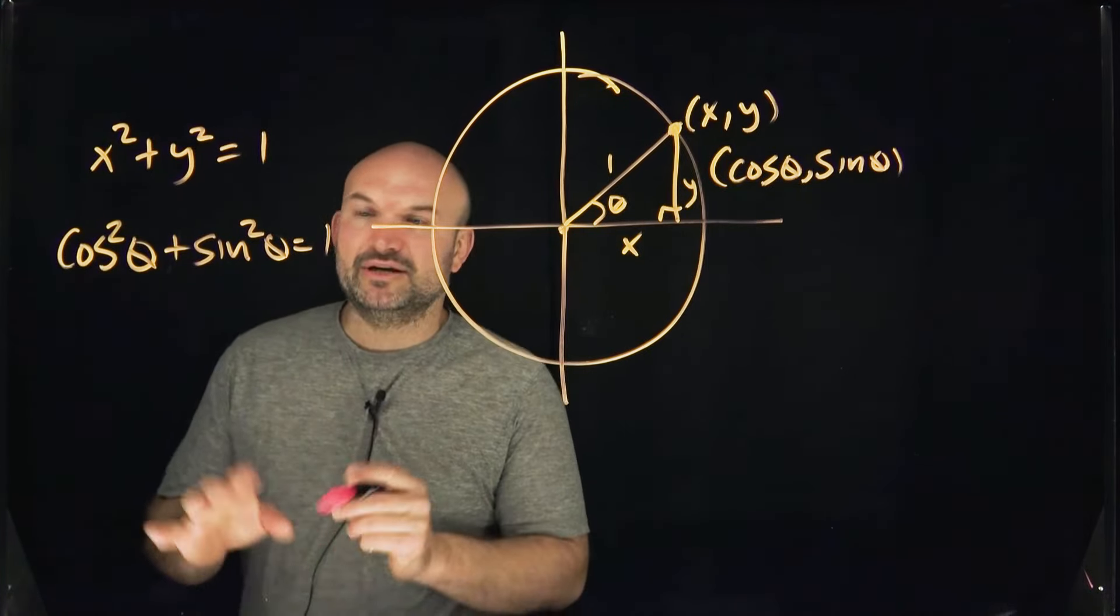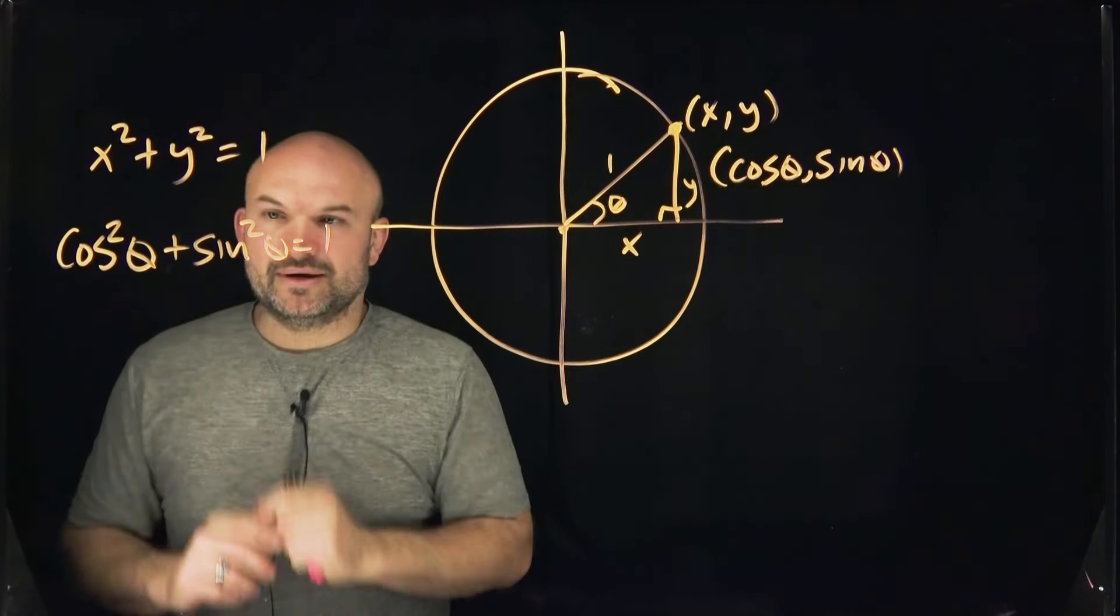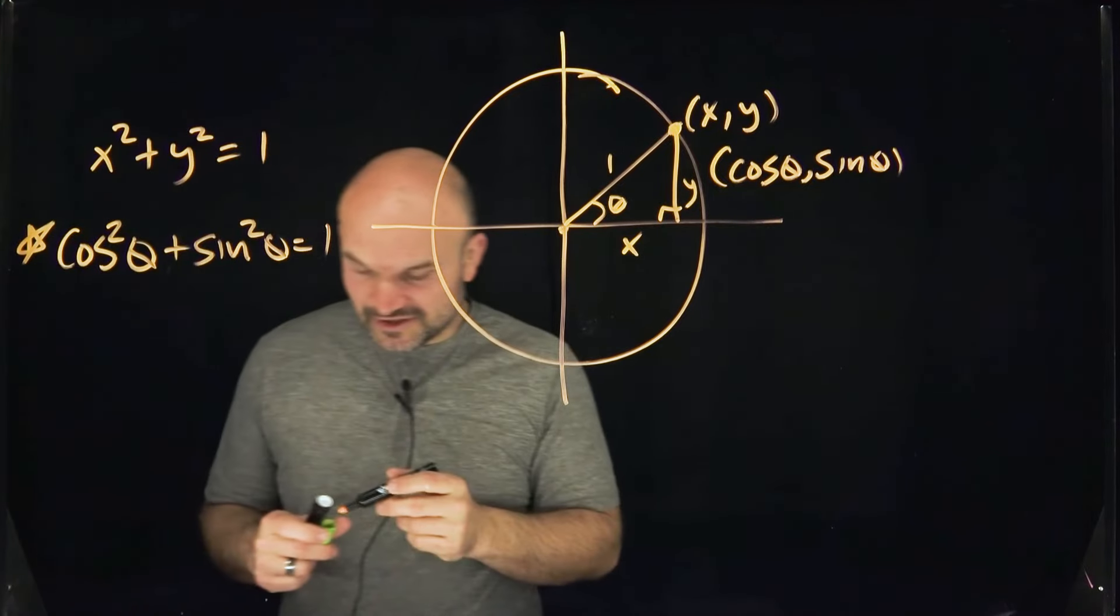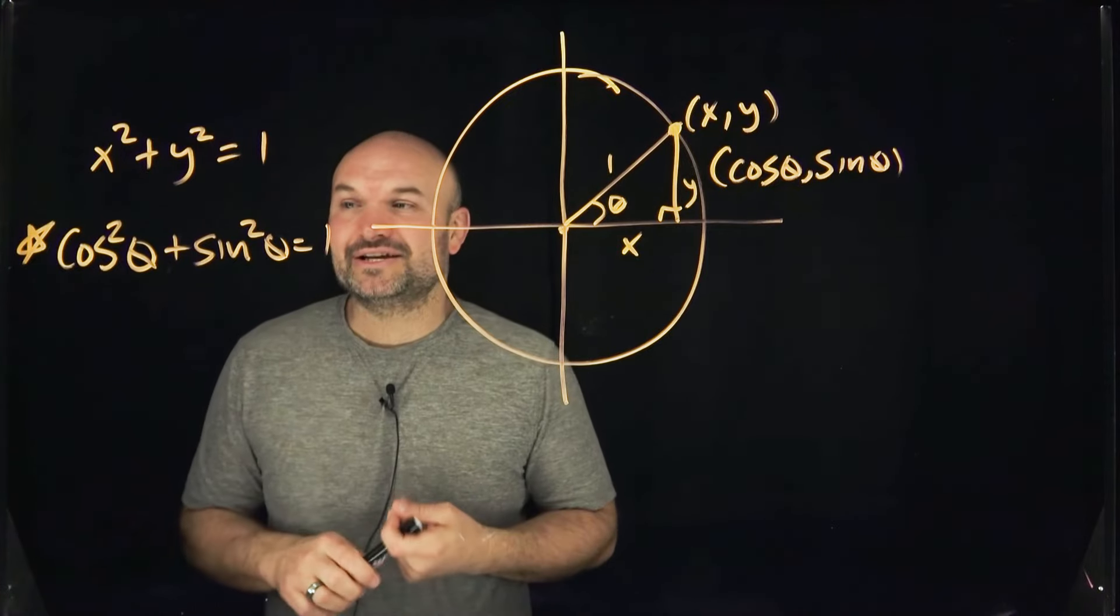So here's a quick, easy way to be able to identify the other Pythagorean identities from this one. All you need to do to find the other two is just divide by sine and cosine.